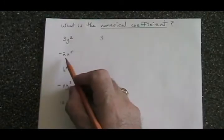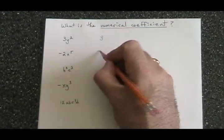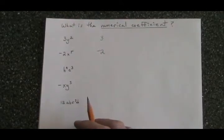In negative 2x to the 5, you can see that the numerical coefficient is negative 2. You can't just put the 2, it's negative 2. The sign is part of the numerical coefficient.